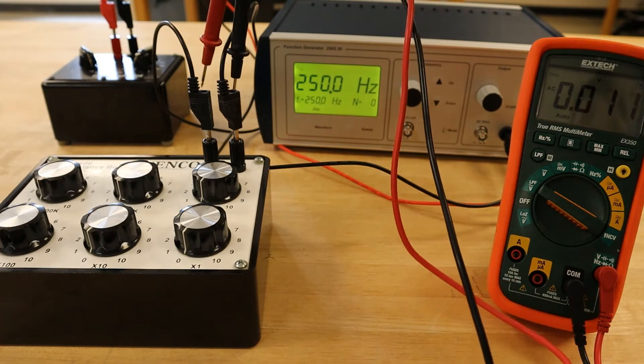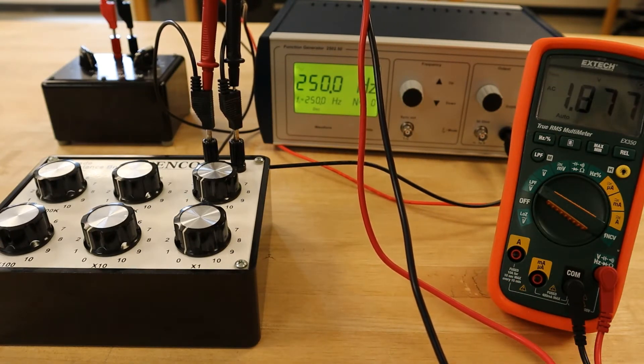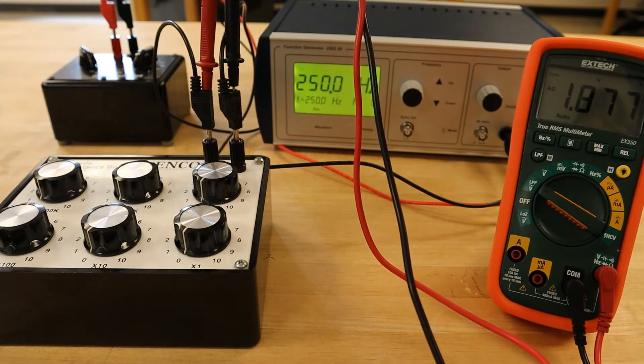That being said, we'll measure the voltage across the decade resistor, and then calculate the RMS current, impedance, reactance of the capacitor, as well as an experimental capacitance for the capacitor.